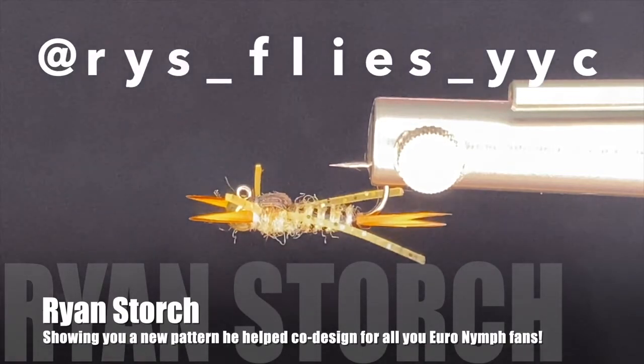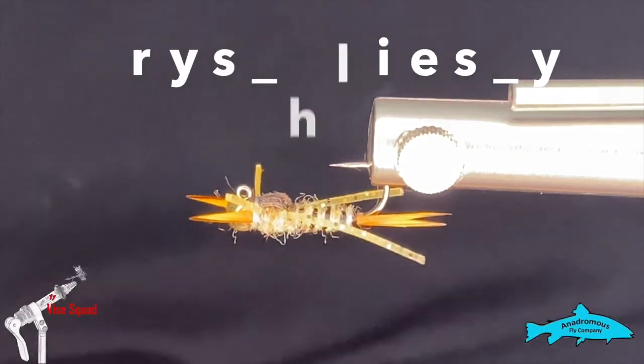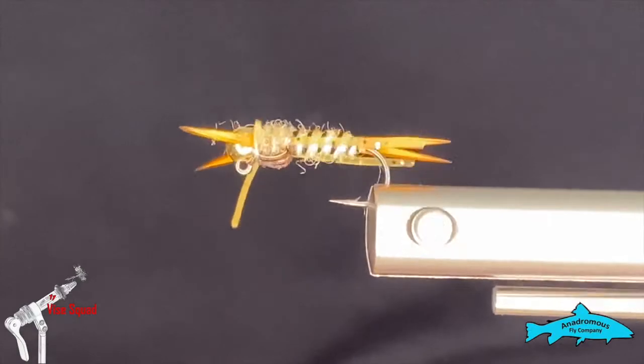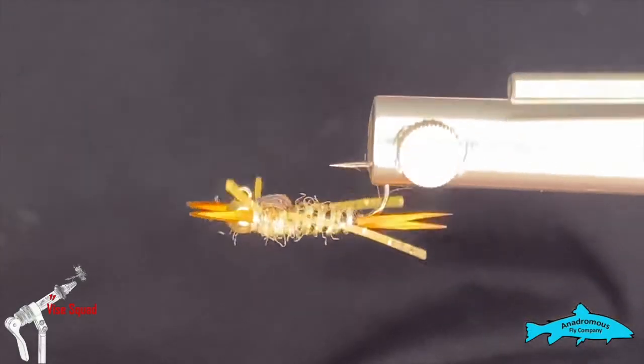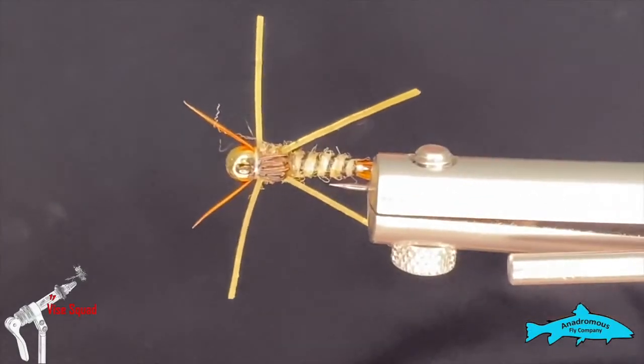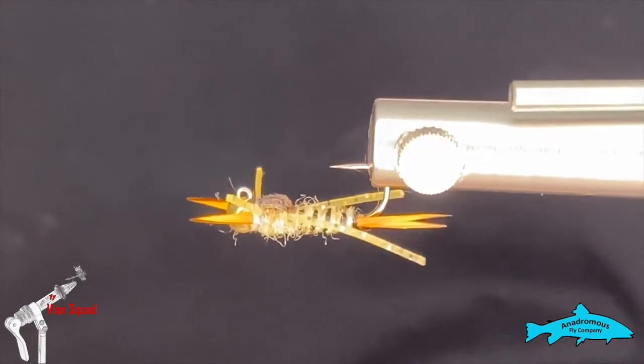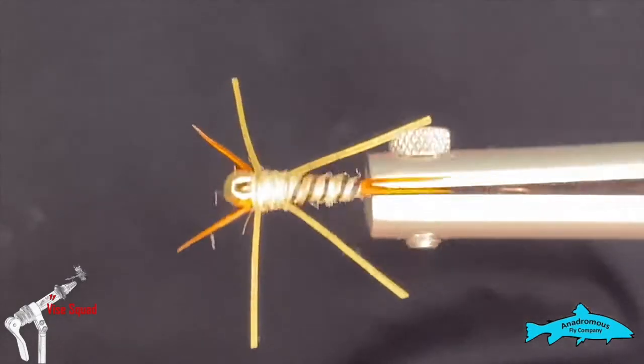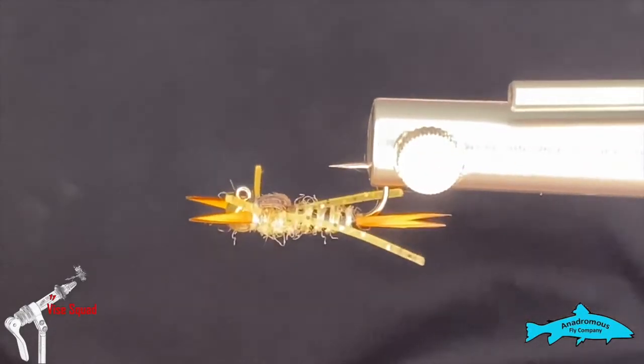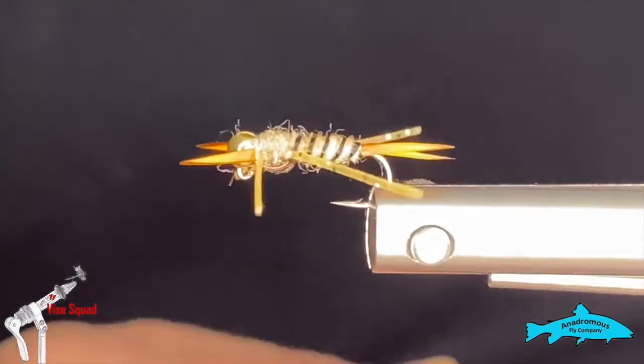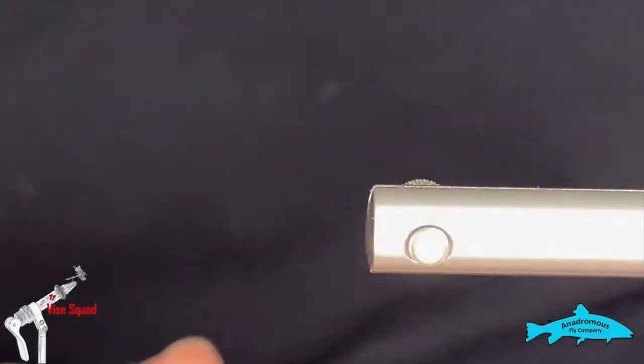Good day everyone, welcome to this week's edition of the Vice Squad brought to you by the Anadromous Fly Company. This week we're going to tie a little stonefly pattern that I collaborated with a fellow on coming up with and getting it all dialed in. We've sort of named it the Depth Charge Stonefly - not sure it'll stick, but it might stick to the bottom.